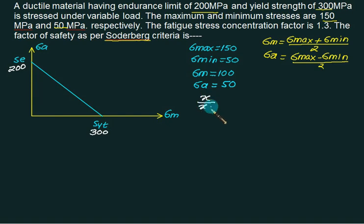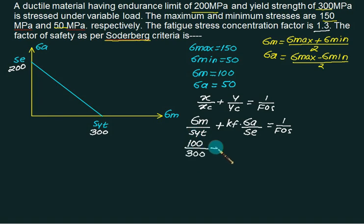We have X upon X intercept plus Y upon Y intercept. If the stress concentration factor is given, we will include this factor. Is it equal to 1 upon factor of safety? Let me write this first. What is X? Is it Sigma M? X intercept is SYT plus Y is equal to—is it Sigma amplitude? And we are given the stress concentration. We will multiply it by K amplitude factor and divided by SE, is equal to 1 by factor of safety. What is Sigma mean? Is 100. SYT 300. Stress concentration factor 1.3. Sigma amplitude 50. Endurance is 200. And factor of safety we can calculate. And this time you will get factor of safety equals to 1.51.